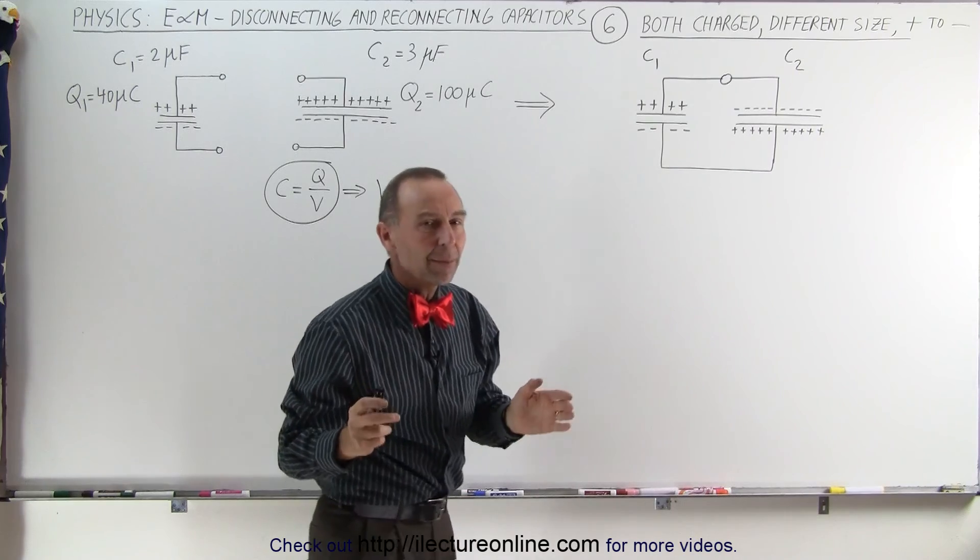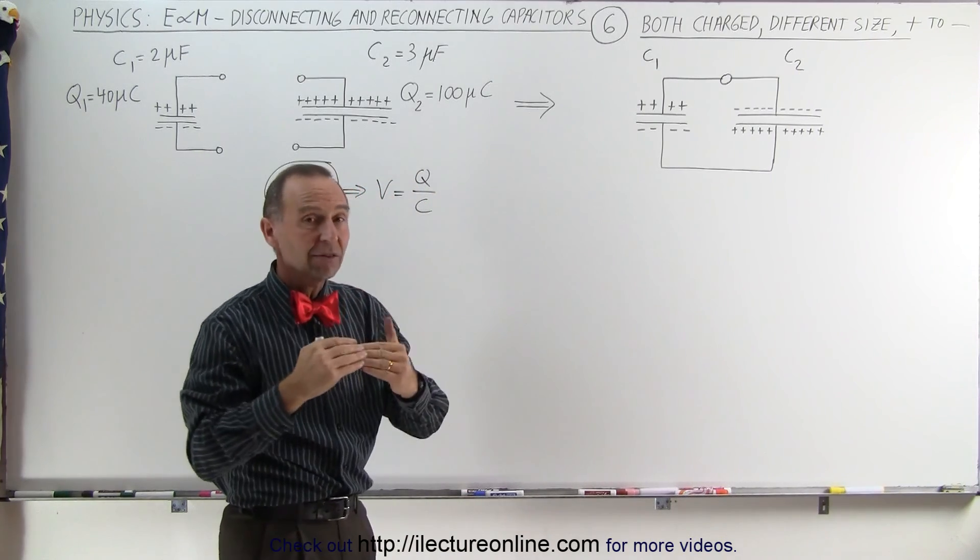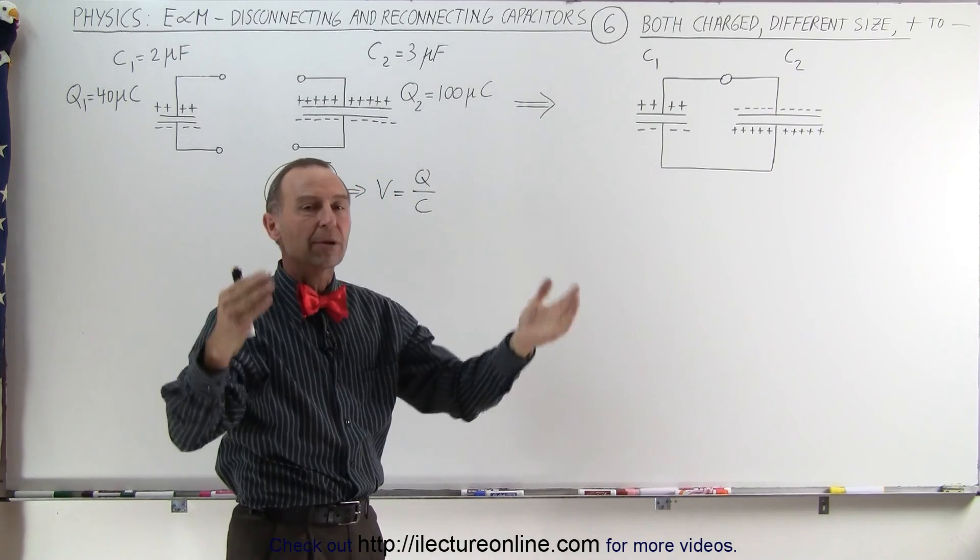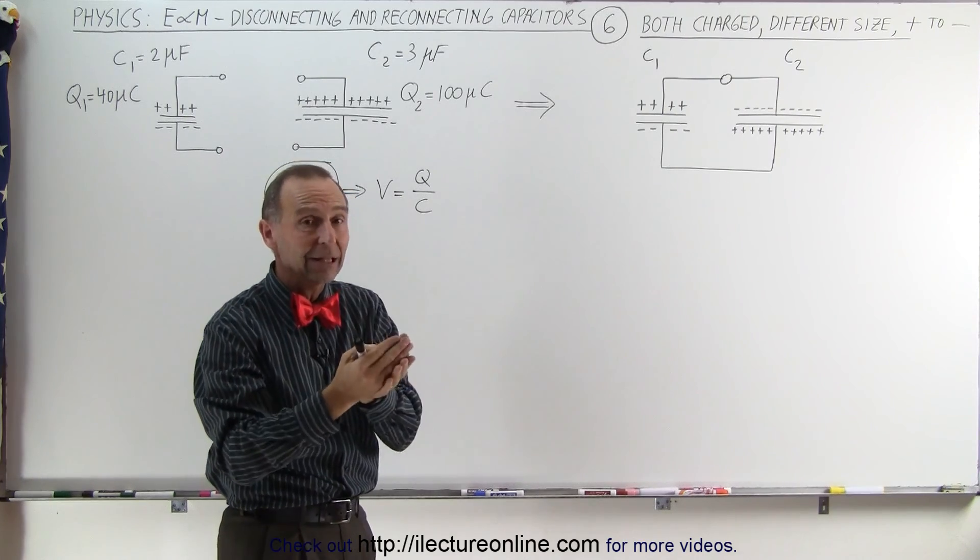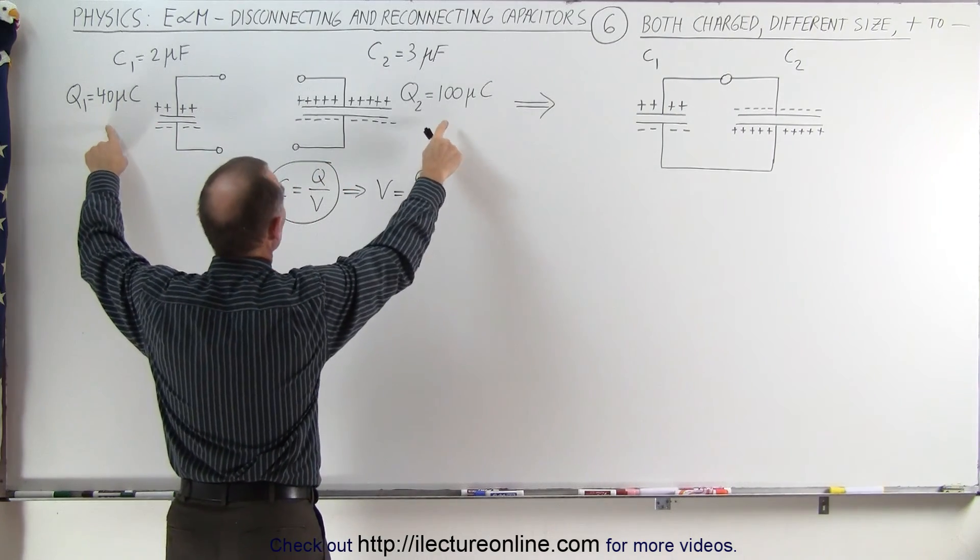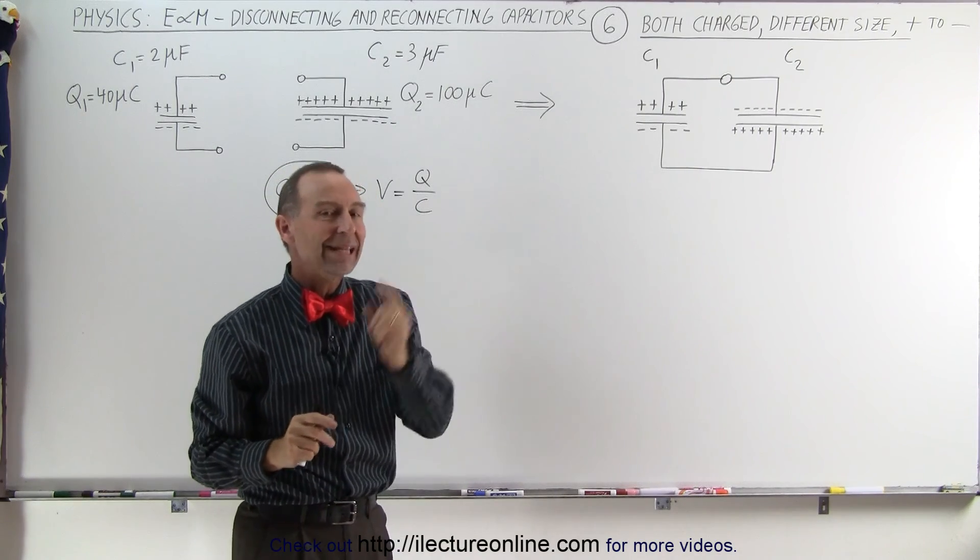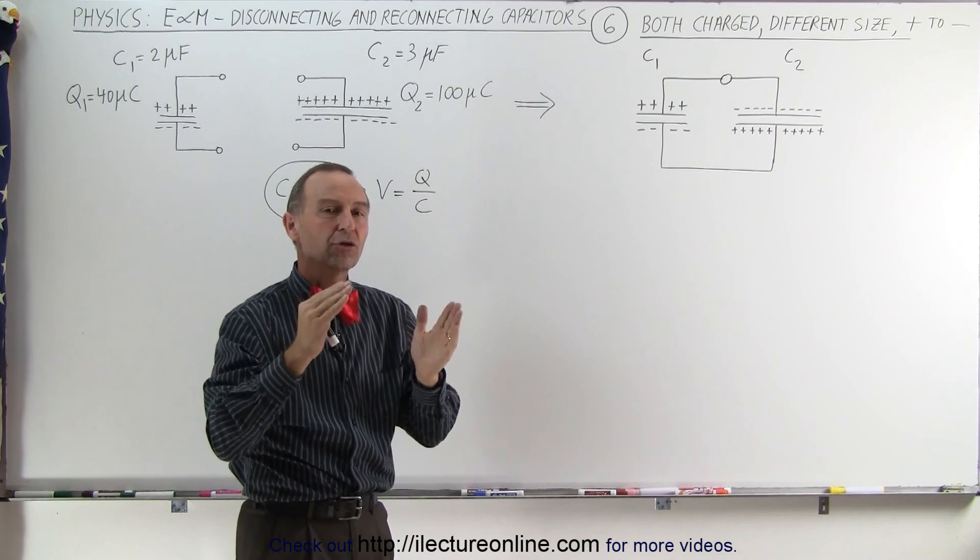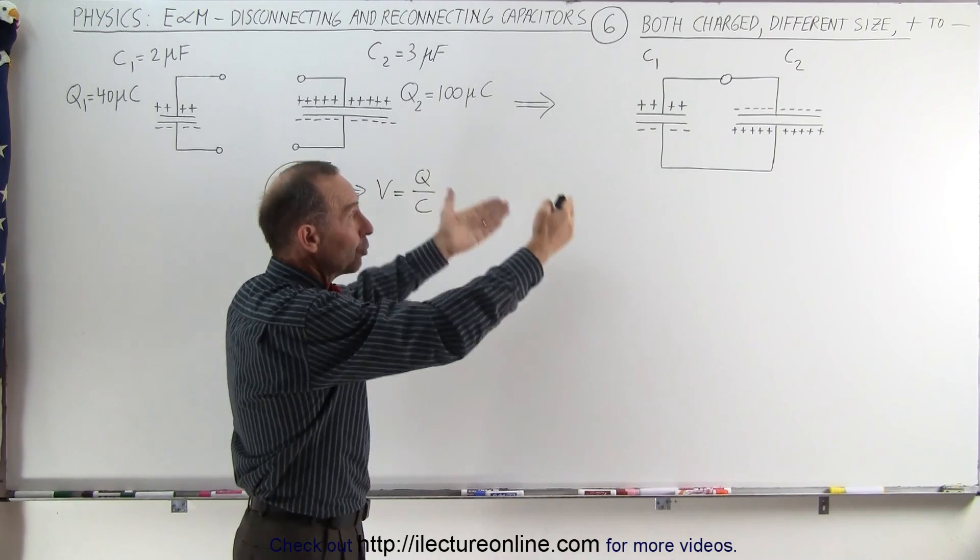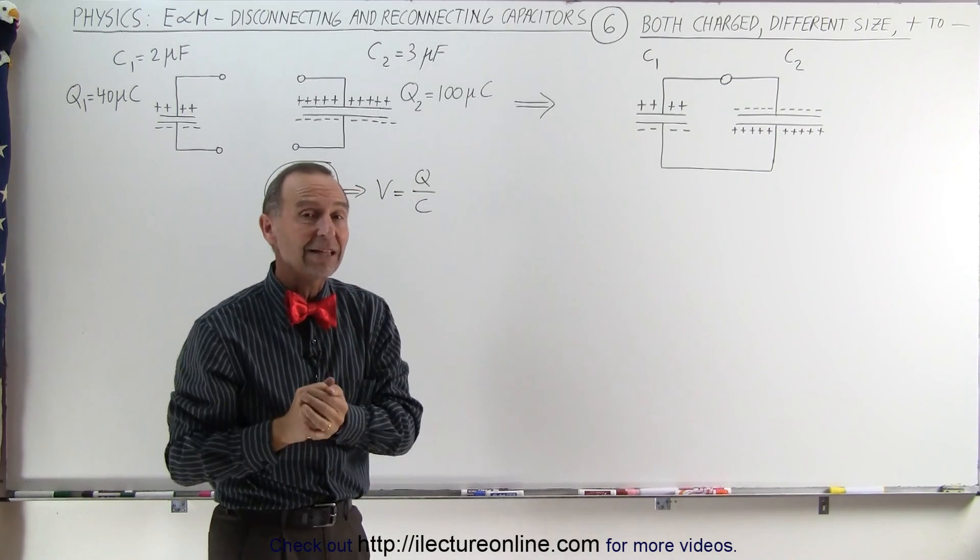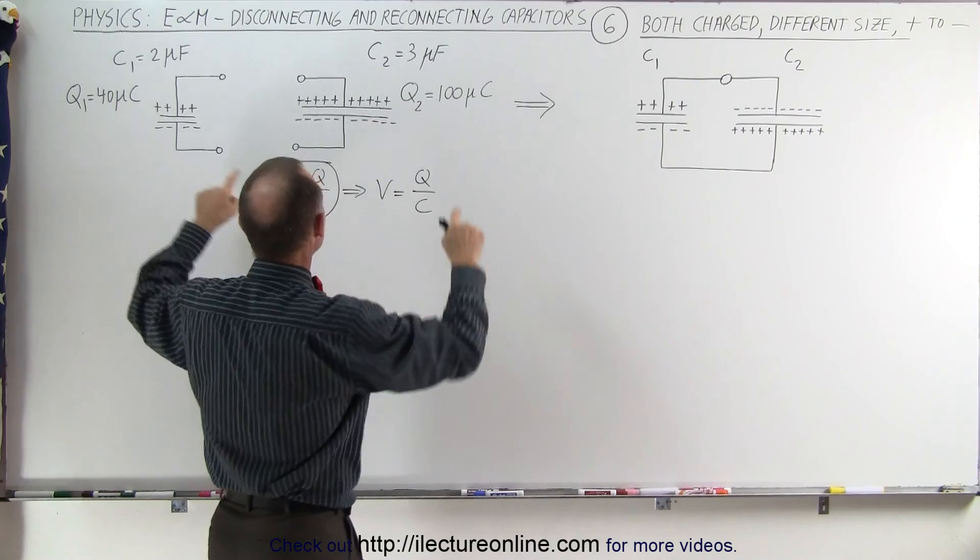In the previous example, when we connect positive to positive, the total charge distributed over the two capacitors at the end when they're connected is going to be the total of the two charges we started with. But if you're connecting them positive to negative, then the total charge that will be distributed over the two capacitors when they reach steady state is going to be the difference between these two.